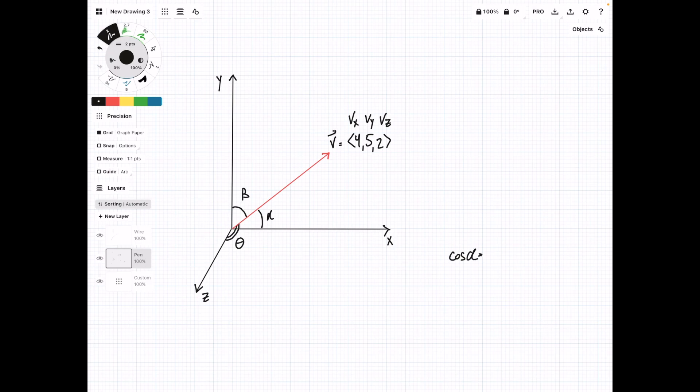So the formulas that we are going to use: cosine alpha is equal to vx over the magnitude of v, cosine beta is equal to vy over the magnitude of v, and finally, cosine of theta is equal to vz over the magnitude of our vector. Okay, so all of these require this magnitude value, so let's figure that out first.